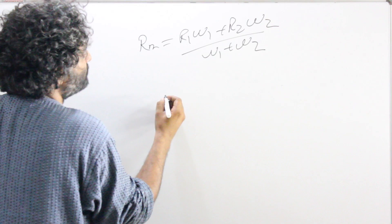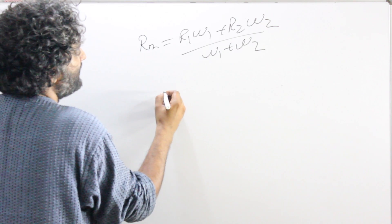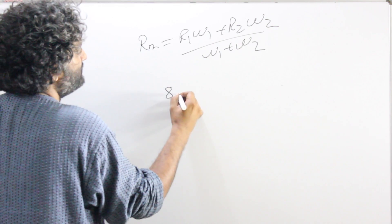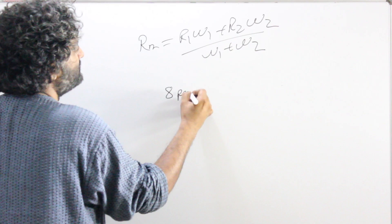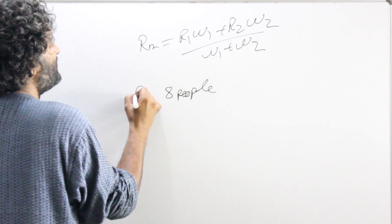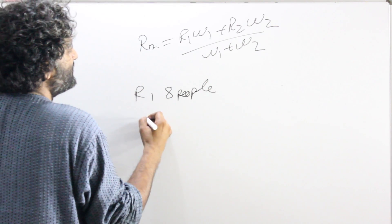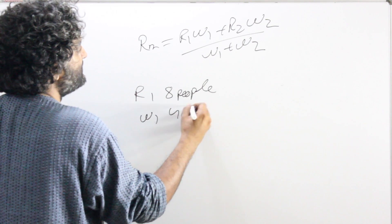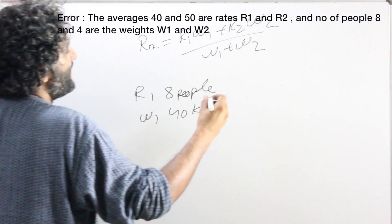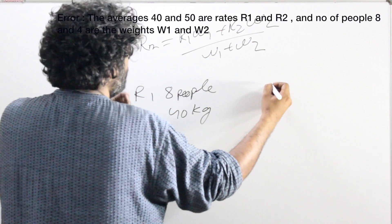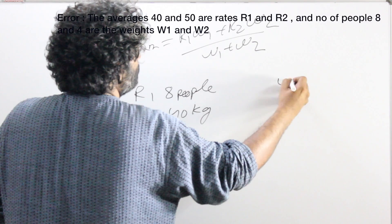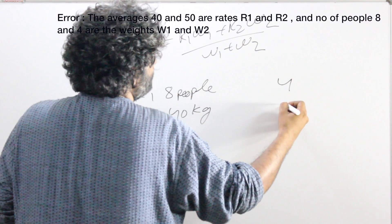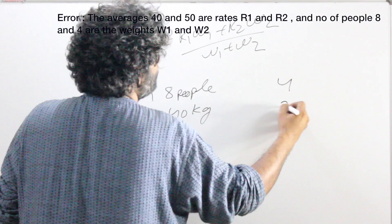Let's say a group has 8 people. So this would be your R1. Their average weight is given as, let's say, 40 kg. And there are 4 people and their average weight is given as 70 kg.